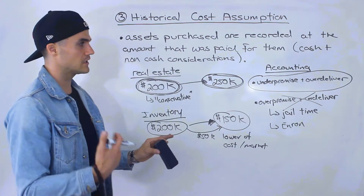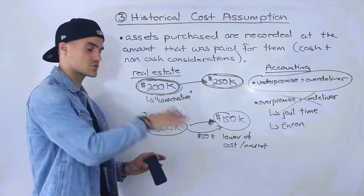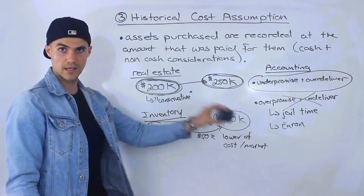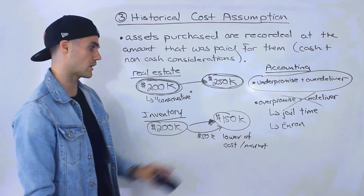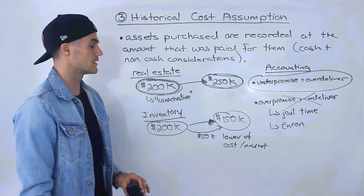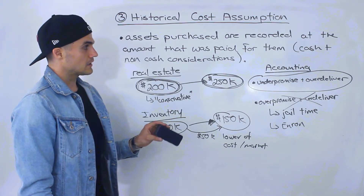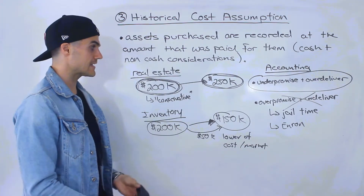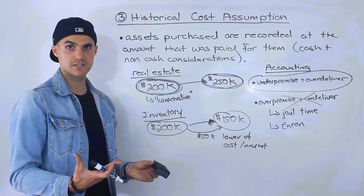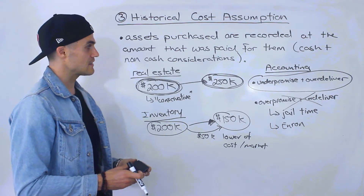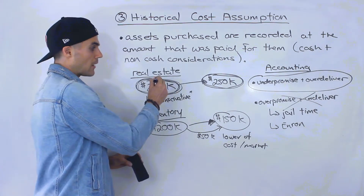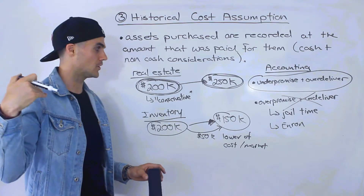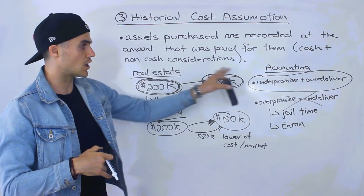In general, if a company is a going concern — meaning they'll continue to operate well into the future — assets are generally going to go up in value and inventory is going to be sold. But we still have to watch for these types of losses. One cool result of the historical cost assumption is that it creates investment opportunities. Let's say you're looking at a company that bought $200,000 worth of real estate, but they bought it 10 or 20 years ago, and you're confident the real estate has gone up in value.